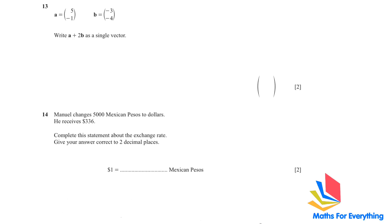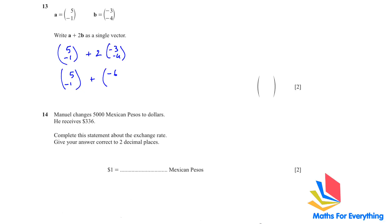Question 13: a = (5, −1) and b = (−3, −4). Write a + 2b as a single vector. a + 2b = (5, −1) + 2(−3, −4) = (5, −1) + (−6, −8). Adding components: 5 + (−6) = −1 and −1 + (−8) = −9. So the answer is (−1, −9).